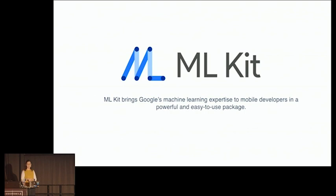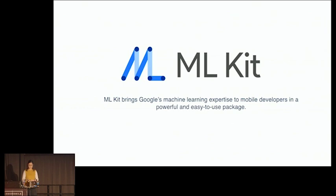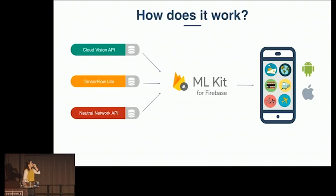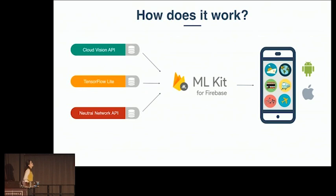Firebase is, I believe, familiar to most of you since you are mobile developers. ML Kit currently comes with a collection of predefined capabilities that are commonly required in applications, and we are able to implement these cases regardless of whether we are familiar with machine learning or not. It's still in beta — not generally available yet. When we look at ML Kit, Google is not doing something entirely new. They just put their existing machine learning tools together and created a package for mobile developers. It runs on existing Google machine learning technology, but since it comes with Firebase, it's really easy to use and more accessible for mobile developers.